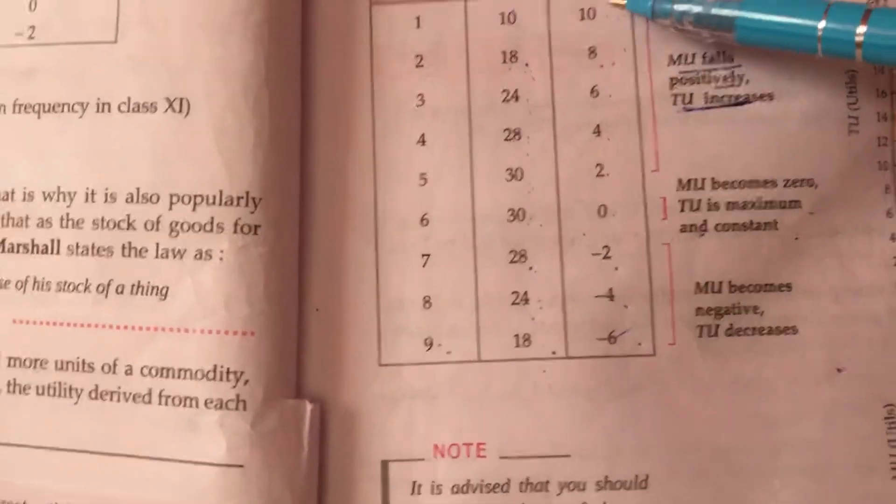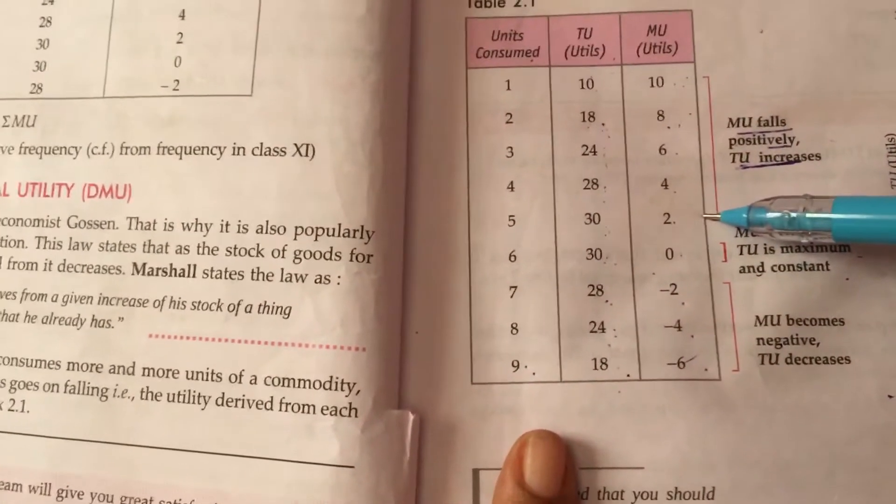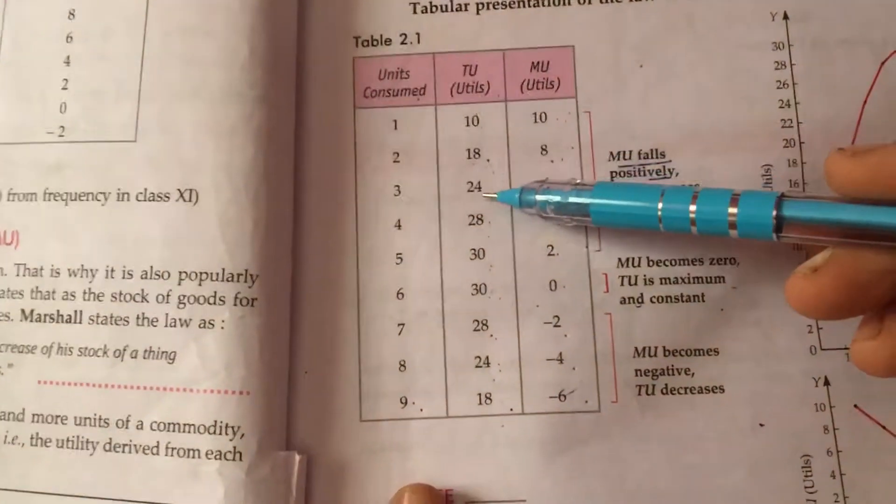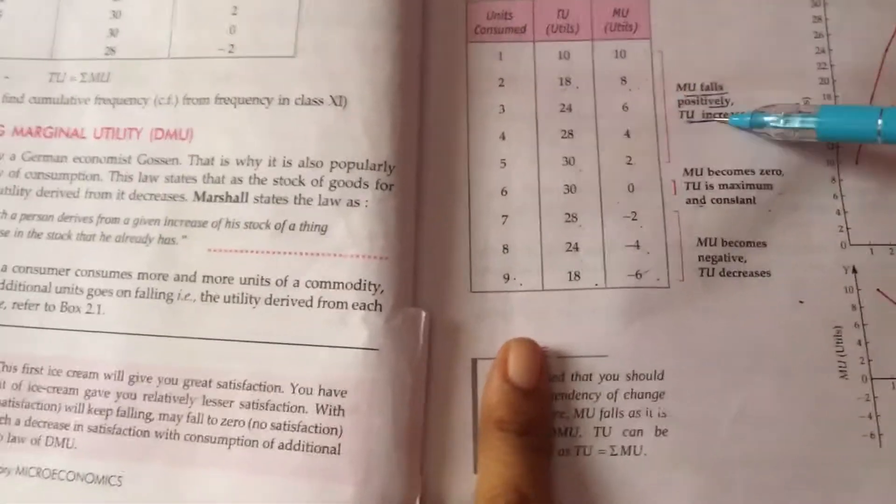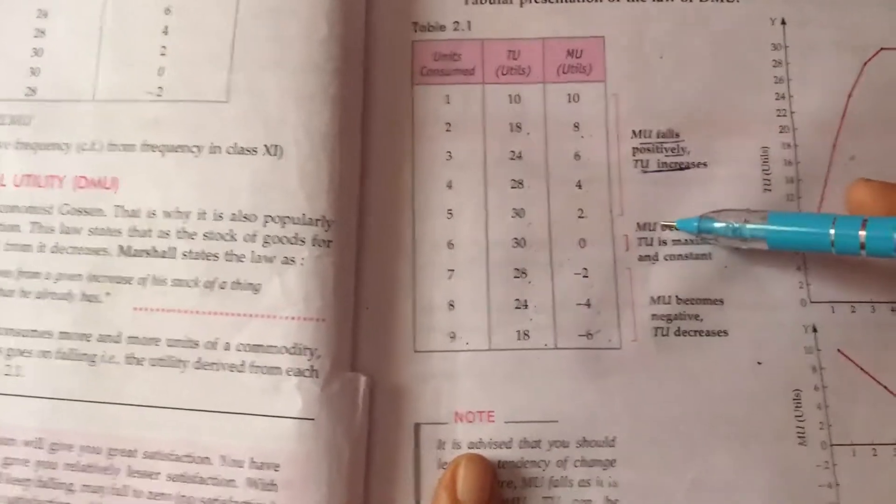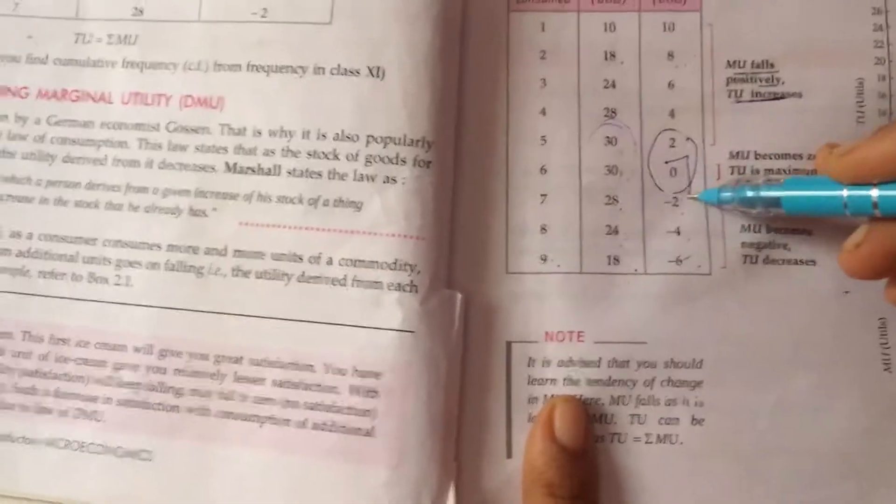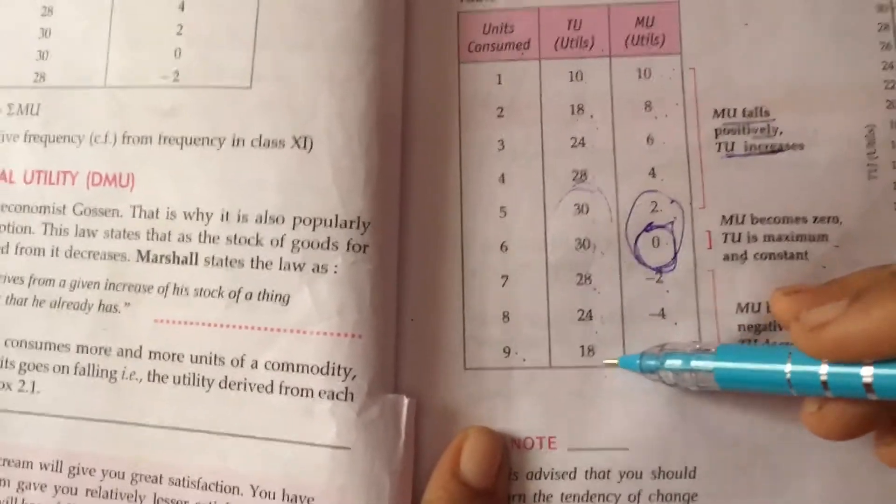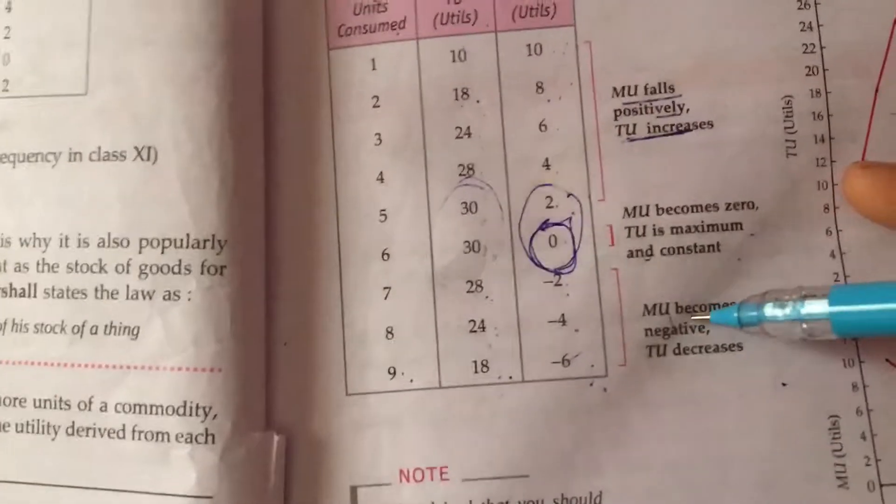So you can see now that marginal utility will decrease. This is the first phase. First phase: when total utility increases—10, 18, 24, 28, 30—this is an increase. So this is the first phase. Then this is the second phase: 30 to 30, this is constant. When your total utility is constant, then your marginal utility is 0. And when the total utility decreases—28, 24, 18—then your marginal utility is negative: minus 2, minus 4, minus 6. So this is the third phase when your marginal utility is negative. This table shows this graph, so this graph you can create compulsory in your notebook.